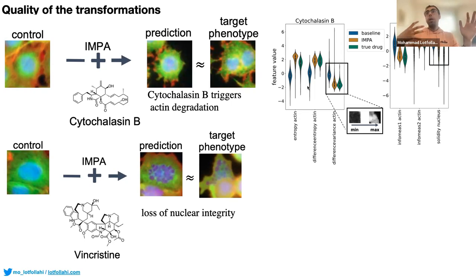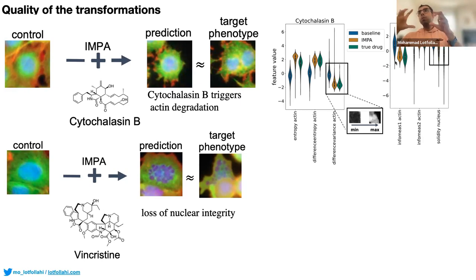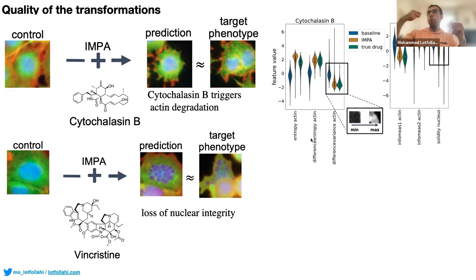To evaluate quantitatively, we use a baseline of DMSO (control). We feed generated and target images from the same drug into CellProfiler and compare hand-designed features designed to demonstrate changes in actin. The distribution of predicted pixel-level features is very similar to the true drug phenotype distribution, shifted away from control. Projecting images into these handpicked features and applying UMAP on ~50 features confirms the predicted distribution closely matches the true drug phenotype.